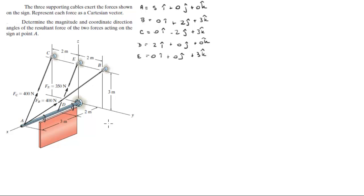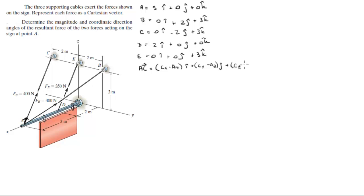Now that we have the position vectors, we find the unit vector AC — a tiny vector with a length of 1. First we find the AC vector: from A to C is computed as (Cx − Ax)i + (Cy − Ay)j + (Cz − Az)k, which comes out to be −5i − 2j + 3k.